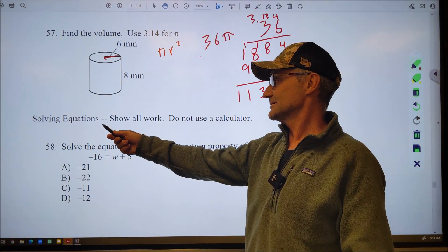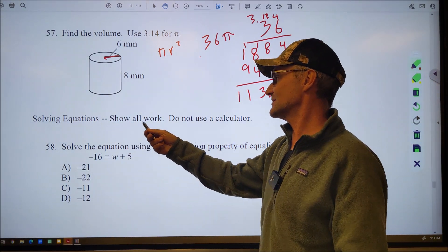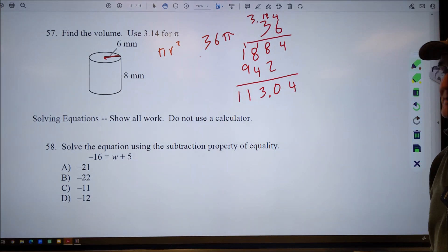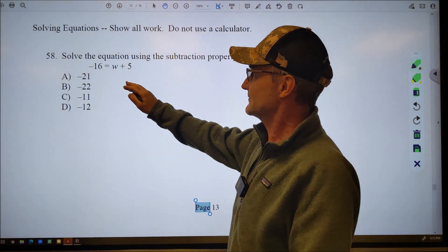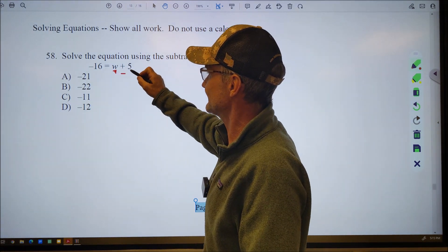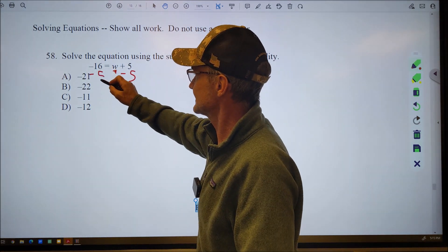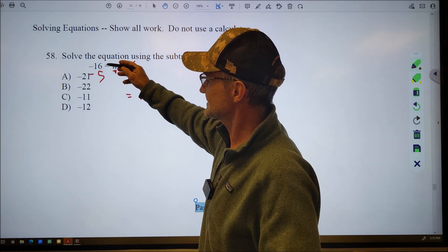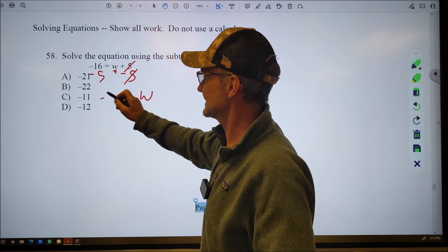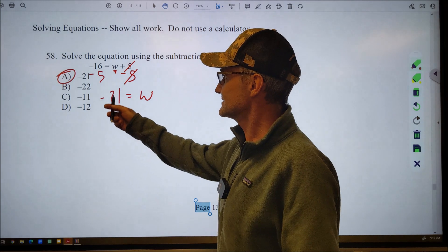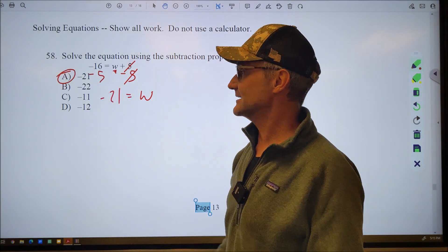Next. I have a variable w right here. I have to get it by itself. I'm going to subtract 5 from both sides. That means that and that will cancel. I have w by itself. And then negative 16 and negative 5 is a negative 21, giving the answer a right there. This is going to make it more negative.